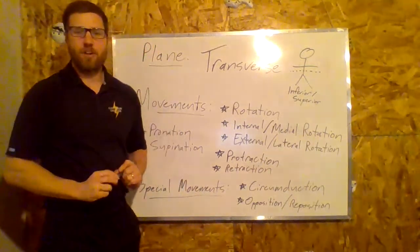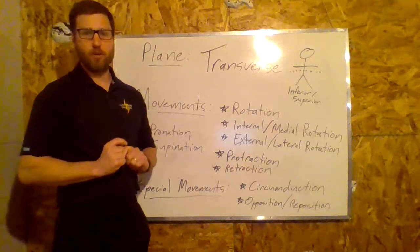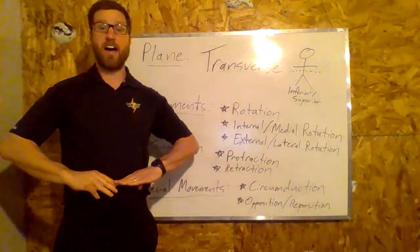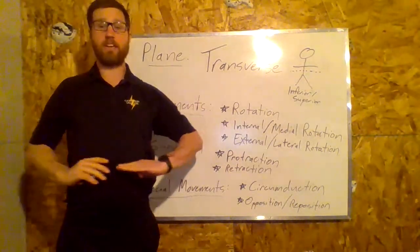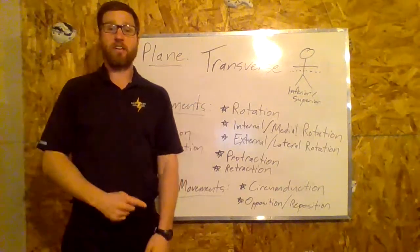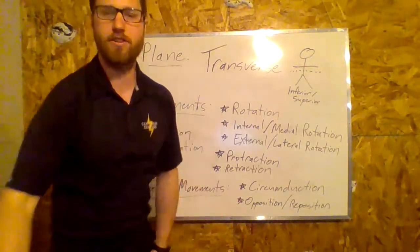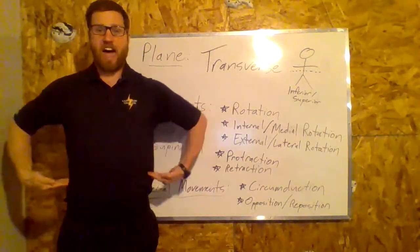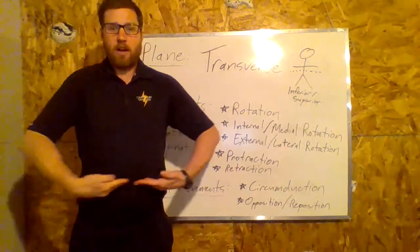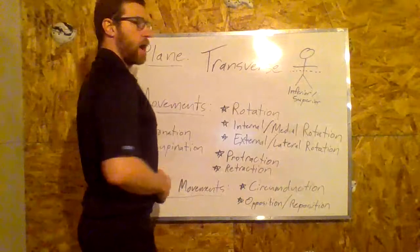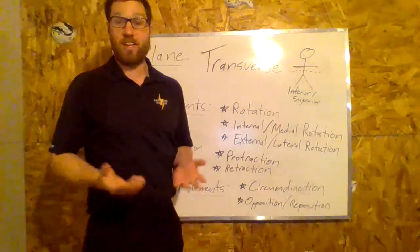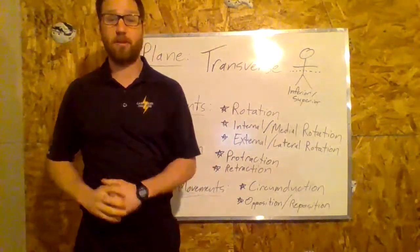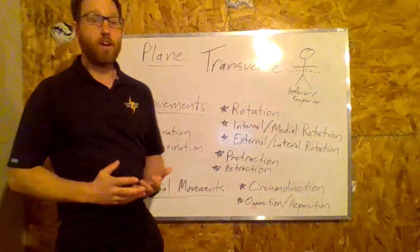Welcome to the last installment of our planes and movements videos. The last plane we're going to look at is the transverse plane. The transverse plane divides me into superior and inferior halves, or proximal and distal halves if you're talking about the limbs. Movement in the transverse plane would be turning around, doing a pirouette, or twisting — that sort of thing.